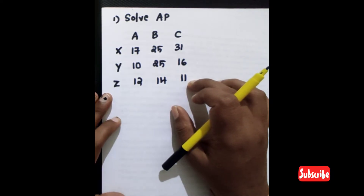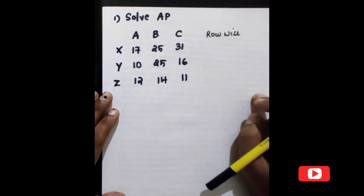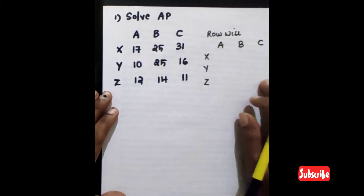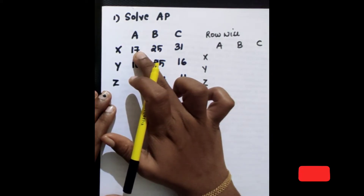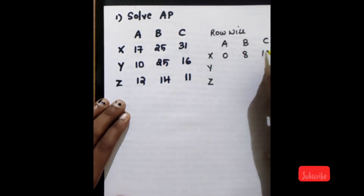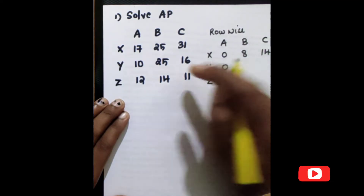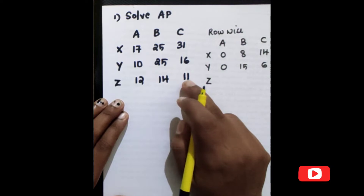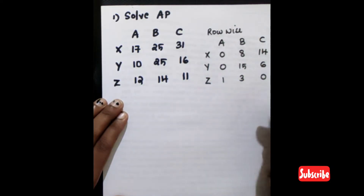The next step is row-wise reduction. We have A, B, C columns and X, Y, Z rows. Row-wise, we subtract the smallest element from each row. First row: smallest element is 17, so 17−17=0, 25−17=8, 21−17=4 (14). Second row: smallest element is 10, so 10−10=0, 25−10=15, 60−10=6 (50). Third row: smallest element is 11, so 12−11=1, 14−11=3, 11−11=0.